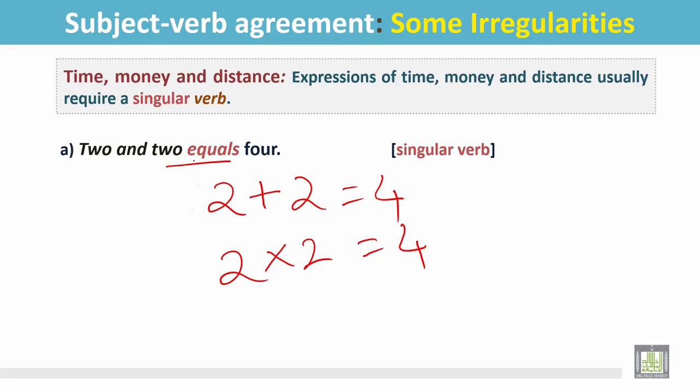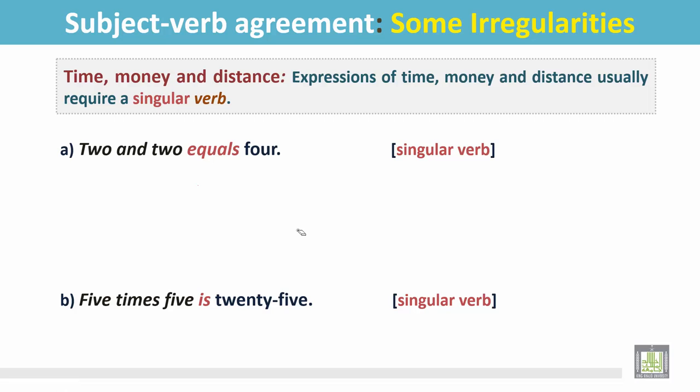The basic verb is equal, and due to the singular subject we add 's' to the verb. Also we can say 5 times 5 is 25. It is a simple multiplication, 5 by 5, and the result is 25.